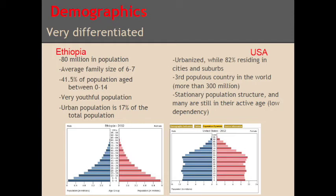On the other hand, Ethiopia has a population of 80 million — less than half of the population of the USA. Even though less populated countries are thought to be less dense and less vulnerable, the urban population of Ethiopia is only 17 percent, meaning the majority of the population reside in areas where drought effects are more severe. Moreover, the average family size is 6 or 7. Droughts may greatly affect children and families with malnutrition, as some families are not able to provide enough food. By looking at the population structure, we can conclude that the youthful population of Ethiopia was much more vulnerable to droughts.